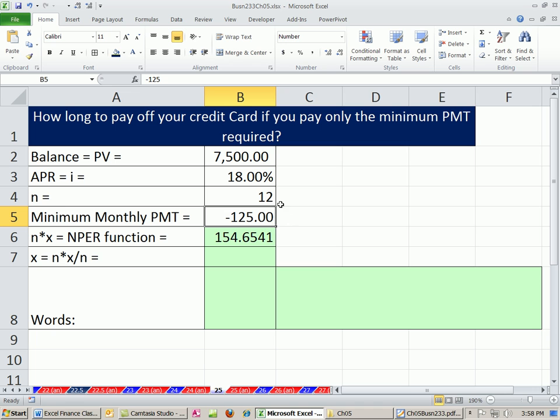This is the present value. These are the future cash flows. Equal amount, equal time between each amount, so it makes an annuity. There it is, 154 months.